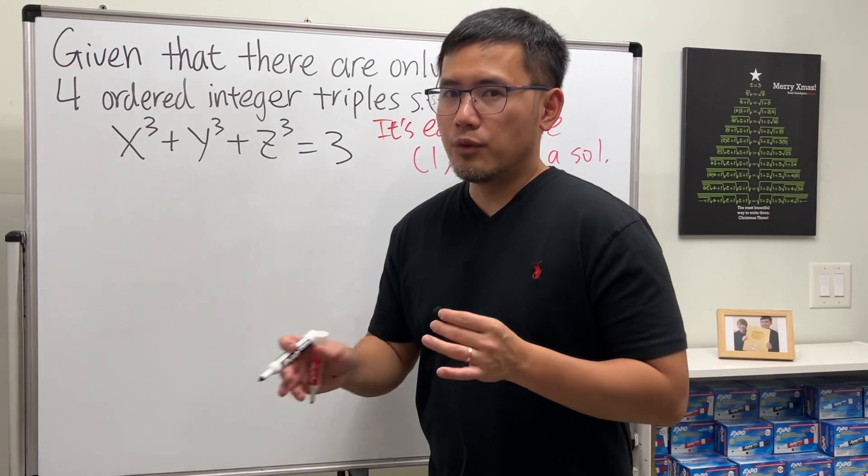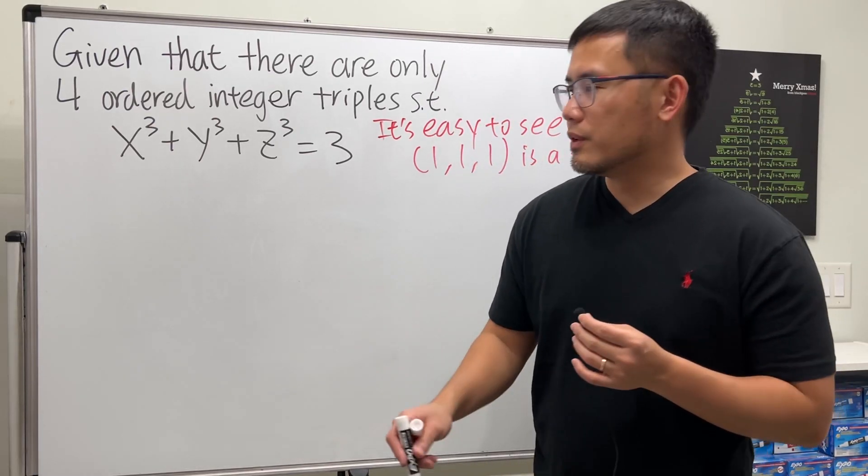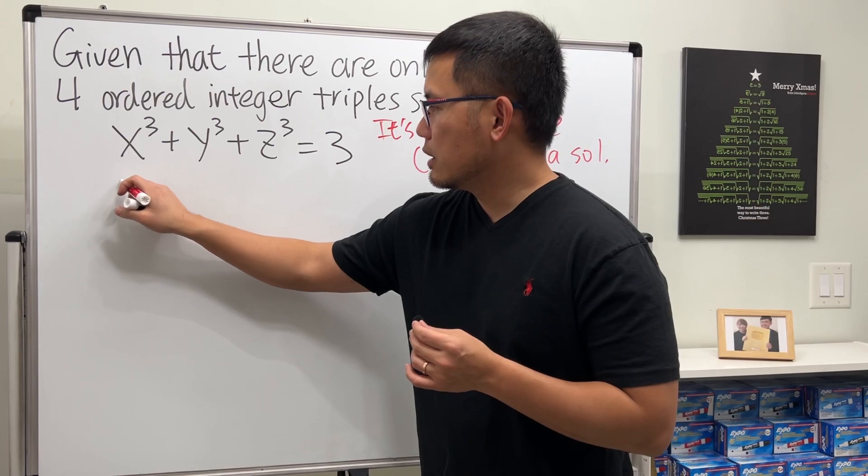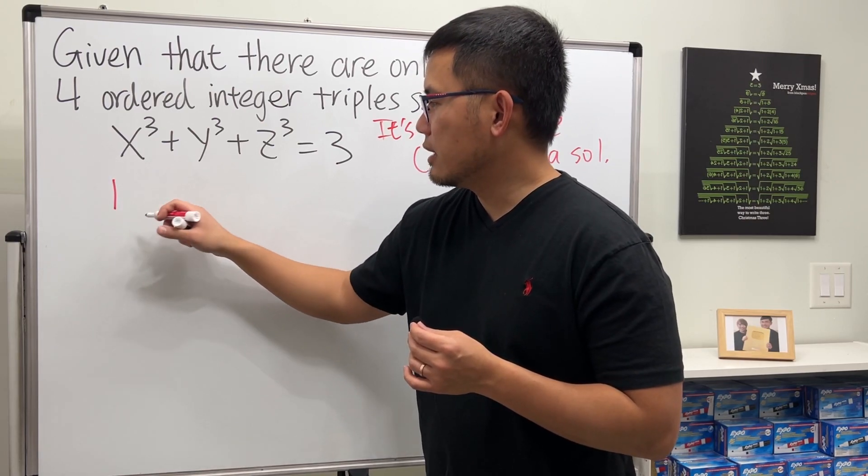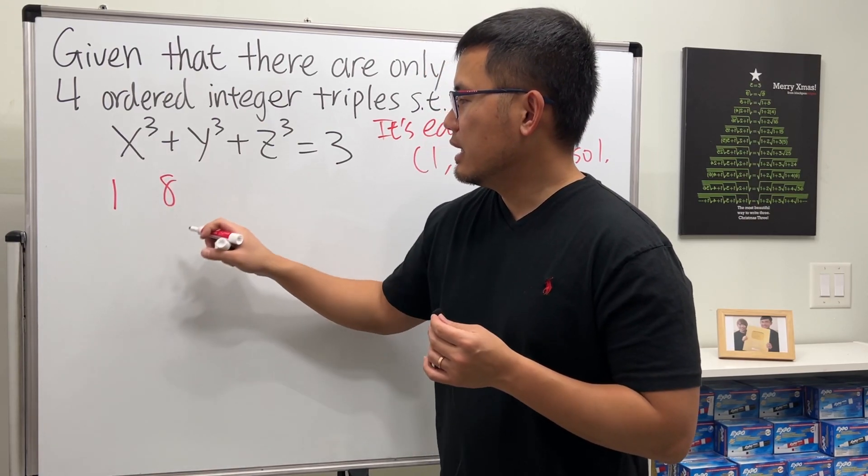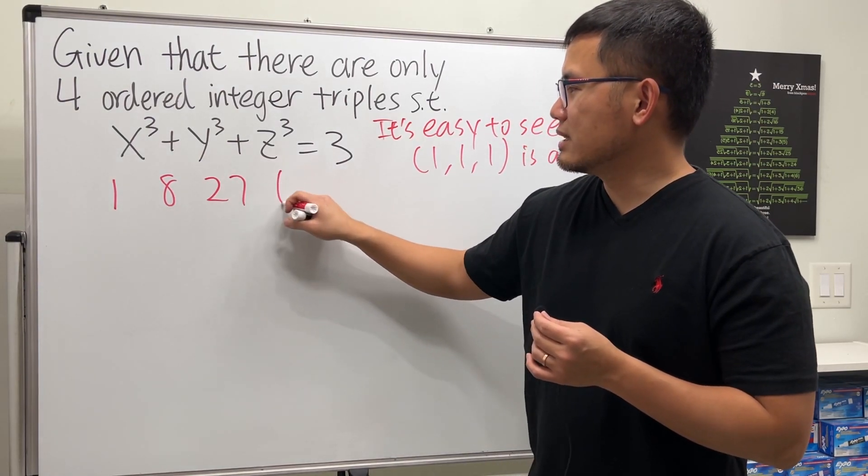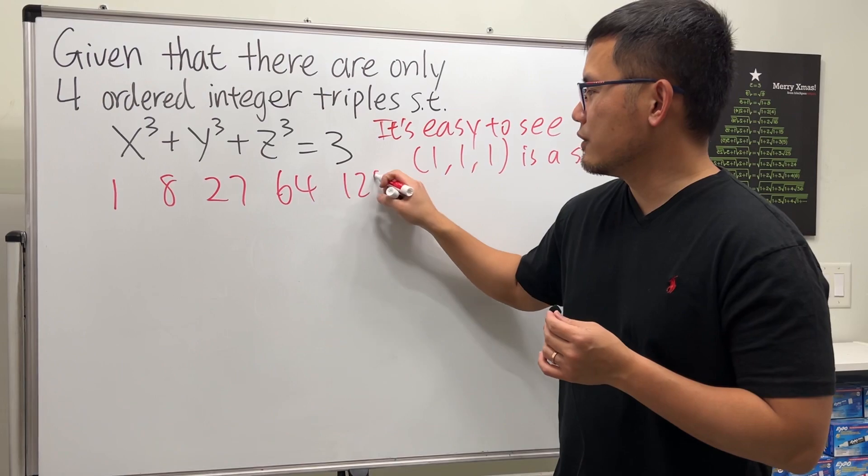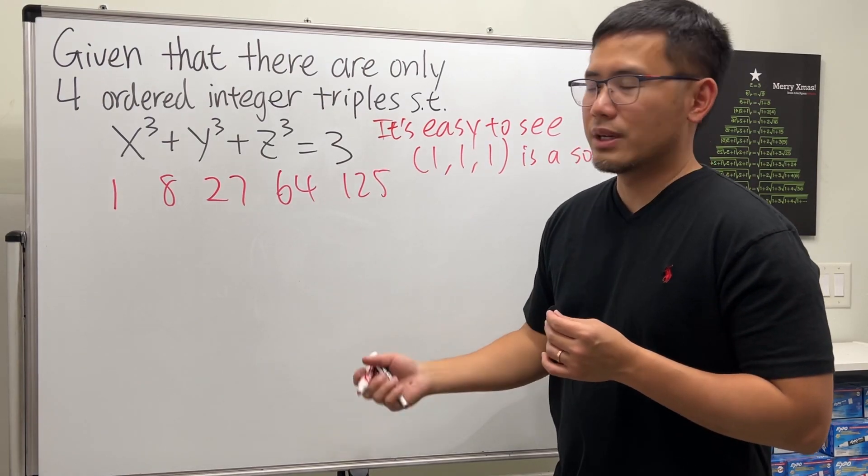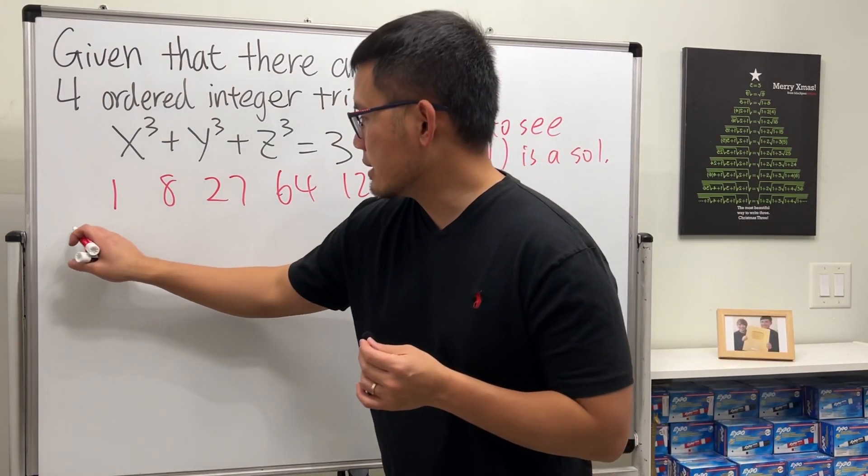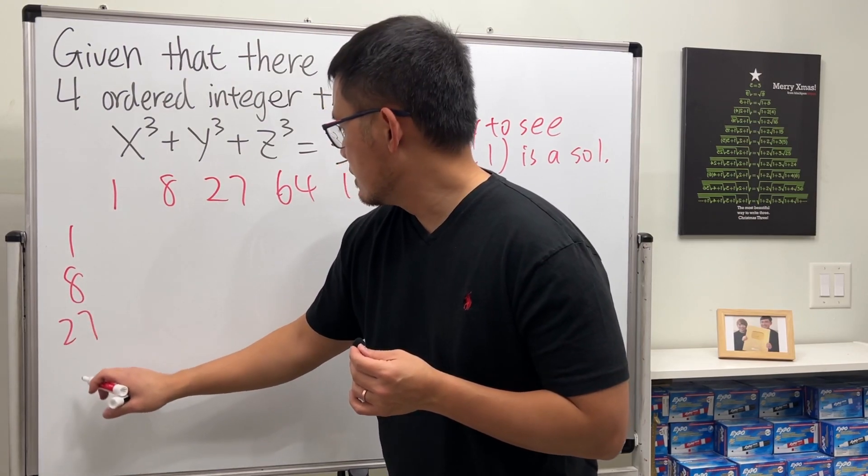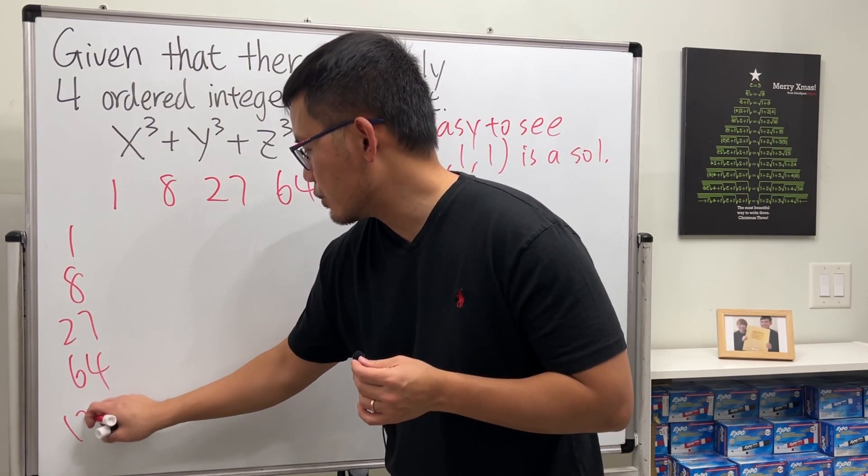I'm going to be looking for the perfect cubes. For example, we have 1³ which is just 1. And then the next one is 2³ which is 8. And then the next one is 3³ which is 27. And the next one is 64, and then 125, and so on. And then right here, I will also write this down: 1, 8, 27, 64, and then 125.